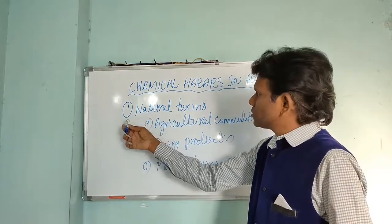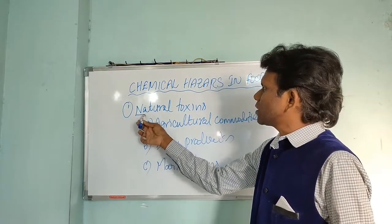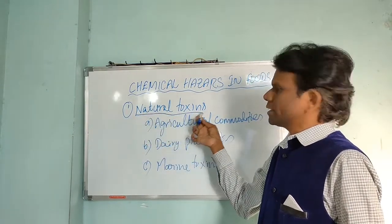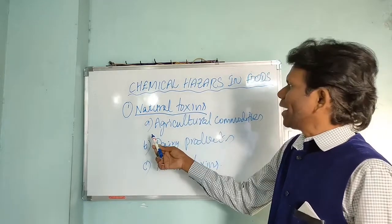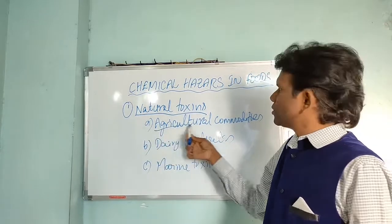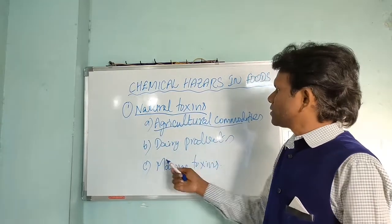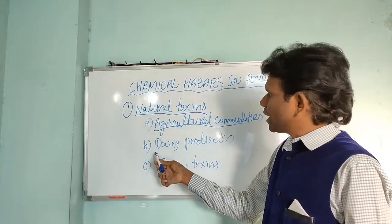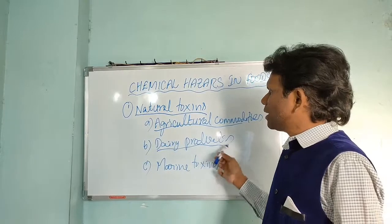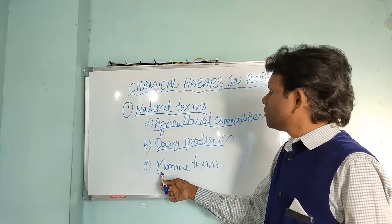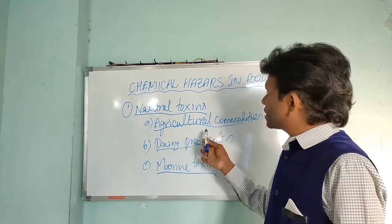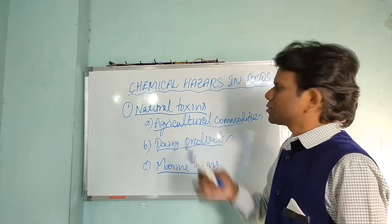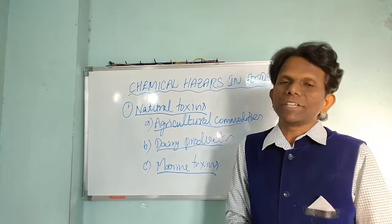Natural toxins in food exist across three kinds of food categories. The first one is Agricultural Commodities, the second one is Dairy Products, and the third one is Marine Toxins. Let us discuss about Agricultural Commodities.